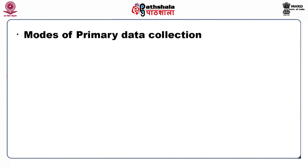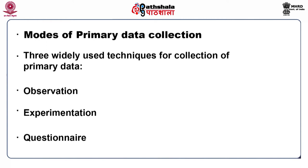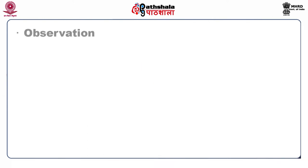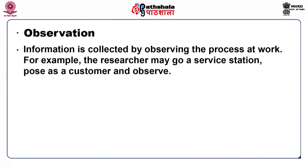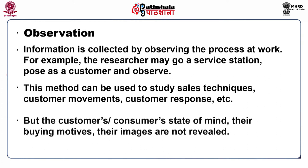Three widely used techniques for collection of primary data include observation, experimentation, and questionnaire. In the observation method, information is collected by observing the process at work. For example, the researcher may go to a service station, pose as a customer and observe. This method can be used to study sales techniques, customer movements, and customer response. However, the customer's state of mind, their buying motives, and their images are not revealed.